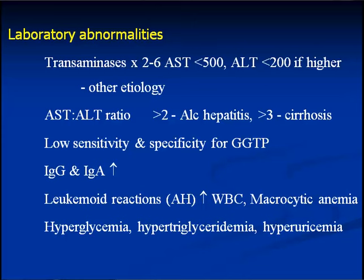Looking at laboratory abnormalities, the transaminases — SGOT and SGPT — are not as high as in viral hepatitis where they are in the thousands. In alcoholic liver disease they are two to six times above the upper limit of normal, and if the AST value is more than 500, think of another etiology. The AST-ALT ratio is another diagnostic guide: in garden variety hepatitis, ALT is always more than AST, so the ratio is less than one. But in alcoholic hepatitis the ratio is more than two, and if the patient has evidence of cirrhosis, the ratio is more than three.